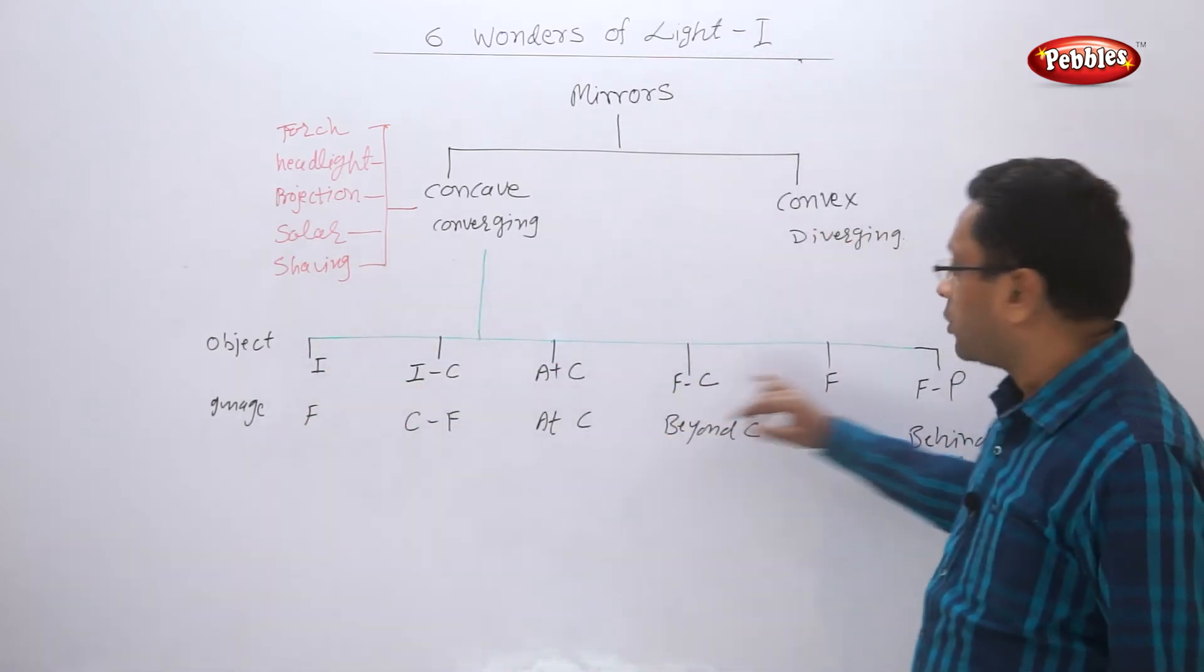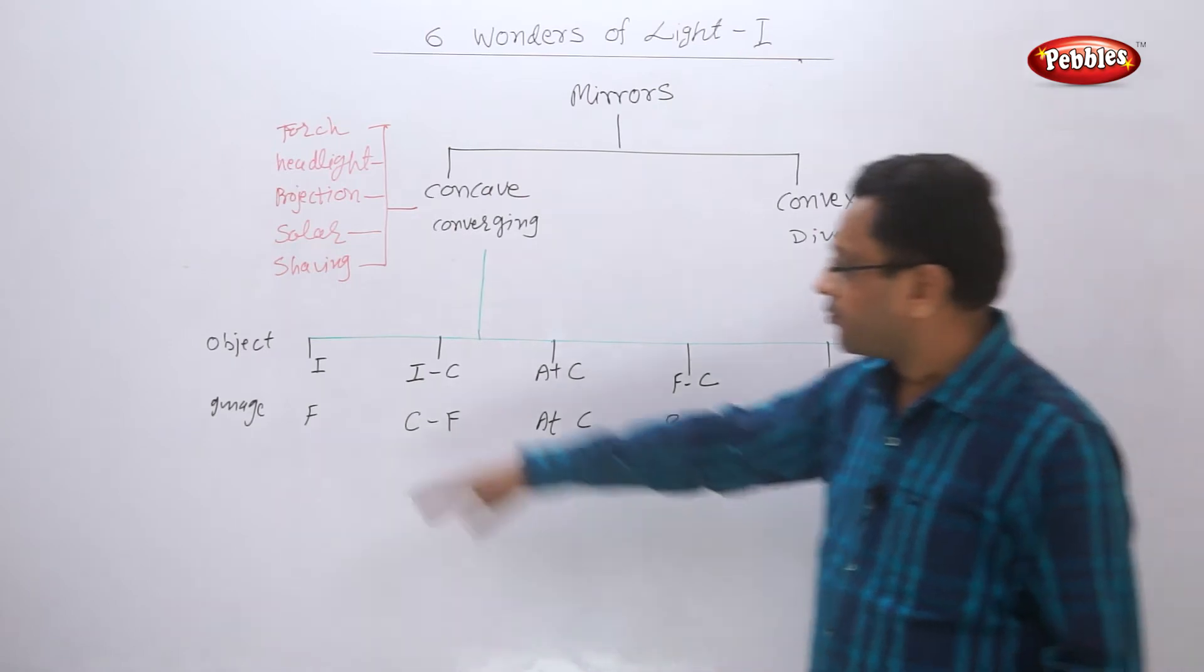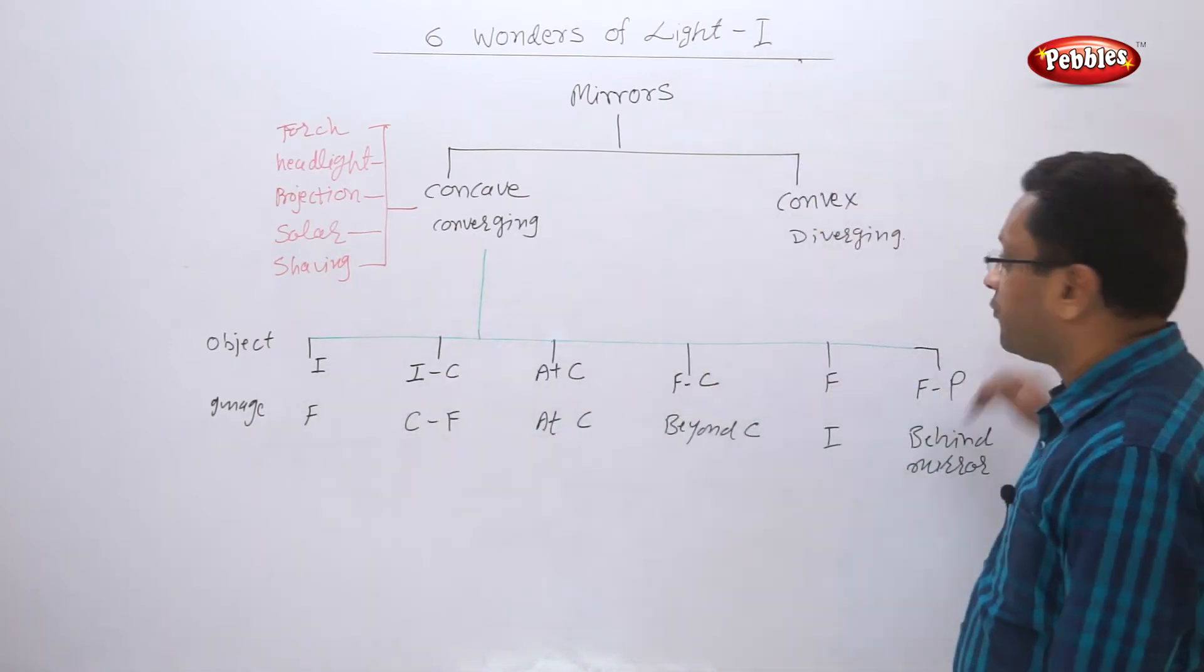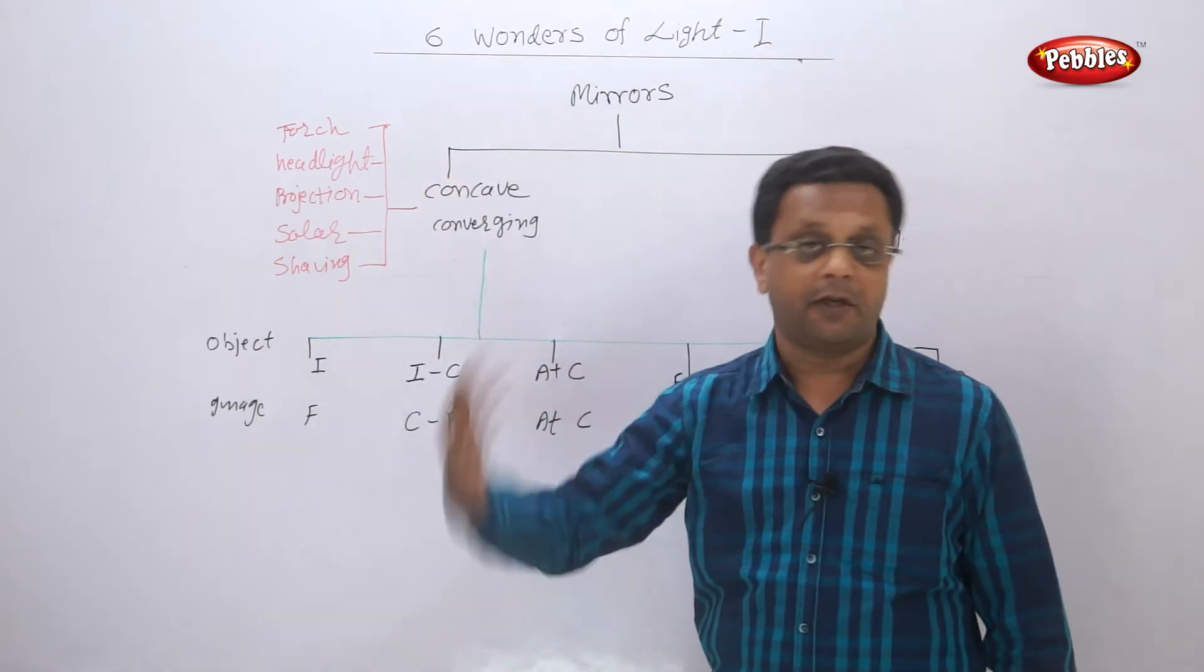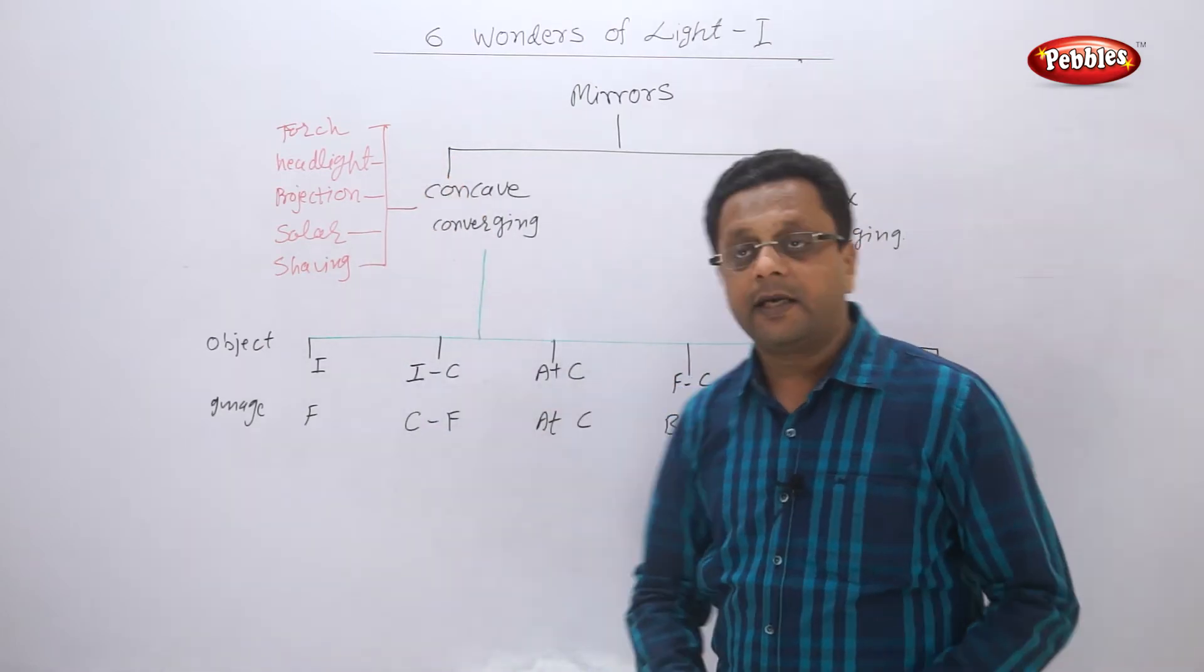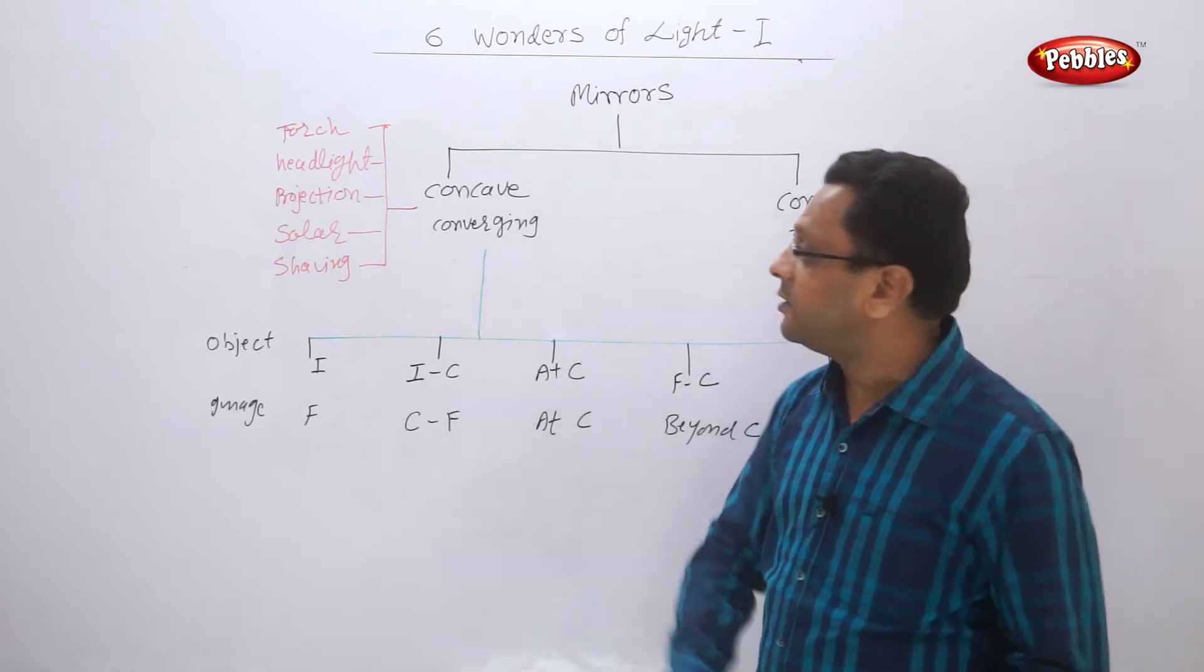Depending on where the object or the light source should be kept, when the light source is kept at different positions, we can use the concave mirror for different applications. We have already seen that in detail.